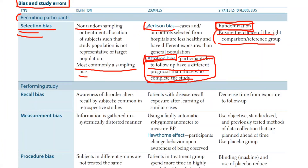They could give you a scenario involving Berkson's bias, attrition bias, or the Hawthorne effect, and you have to identify it correctly — for example, stating it's attrition bias.